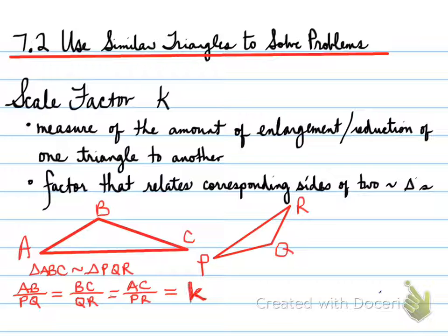That value that you get is equal to the scale factor. That's K, because when I divide the sides out, it doesn't matter as long as they're compared correctly. All of those values will have the same number. That number is your K factor, your scale factor.